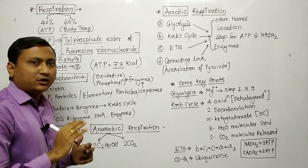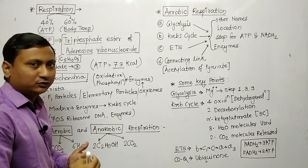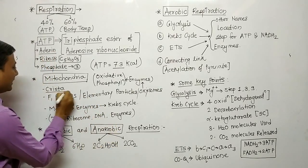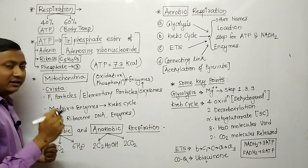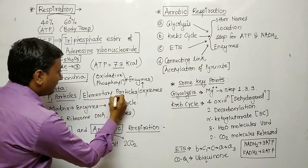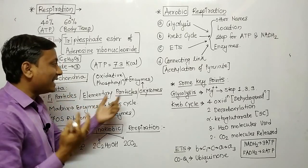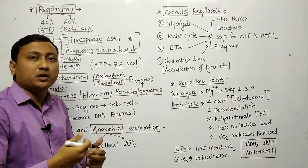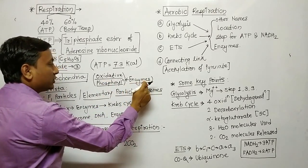Mitochondria is a double membrane bound cell organelle, with an outer membrane and an inner membrane. The outer membrane is smooth and the inner membrane is rough, forming finger-like projections called cristae. On the surface of the cristae there are numerous F1 particles, also called elementary particles or oxizomes. These particles are important because they carry enzymes required for oxidative phosphorylation, that is the production of ATP.